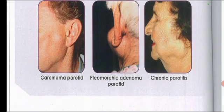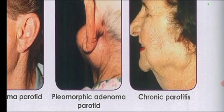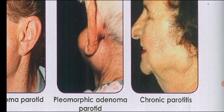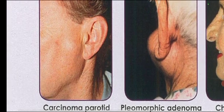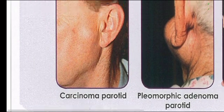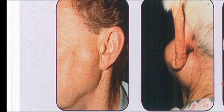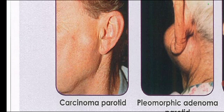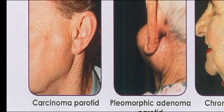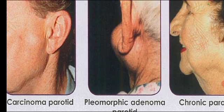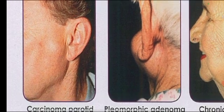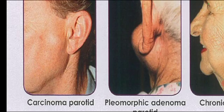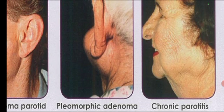Chronic parotitis and pleomorphic adenoma are benign tumors, while the carcinoma of the parotid is the correct answer for this question. In the exam they may give only one picture and ask us to identify, which we can do through the image as well. Crucially, primary facial palsy is present with carcinoma of the parotid, not with benign tumors. All remaining other options were benign and therefore excluded.